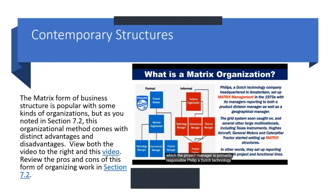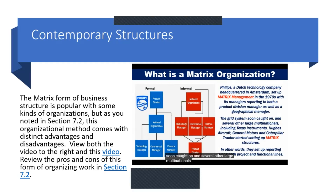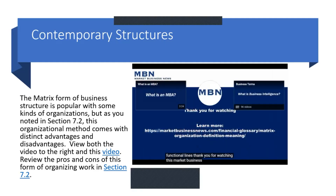Philips, a Dutch technology company headquartered in Amsterdam, set up matrix management in the 1970s, with its managers reporting to both a product division manager as well as a geographical manager. The grid system soon caught on, and several other large multinationals — including Texas Instruments, Hughes Aircraft, General Motors, and Caterpillar Tractor — started setting up matrix structures, reporting along both project and functional lines.